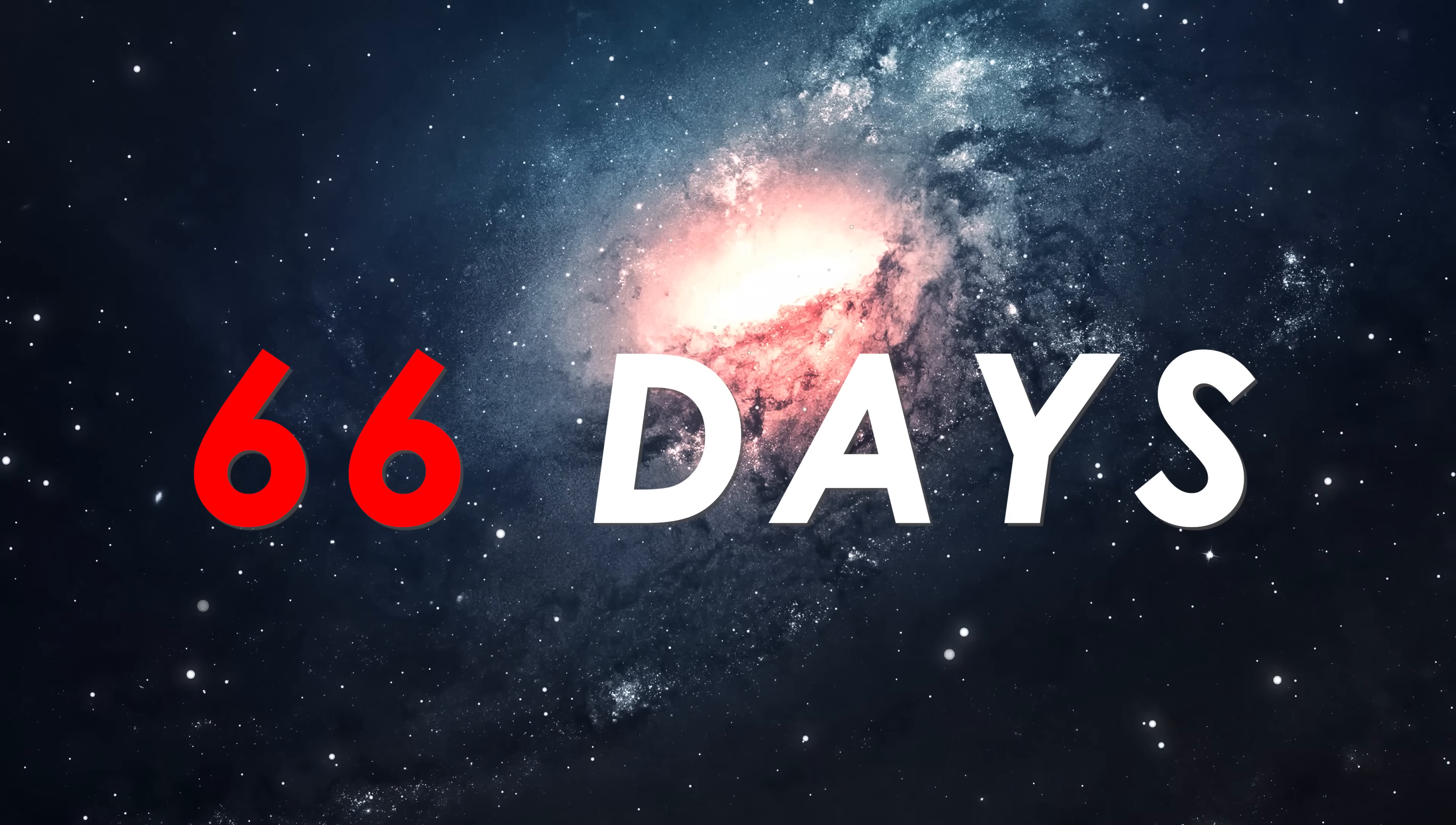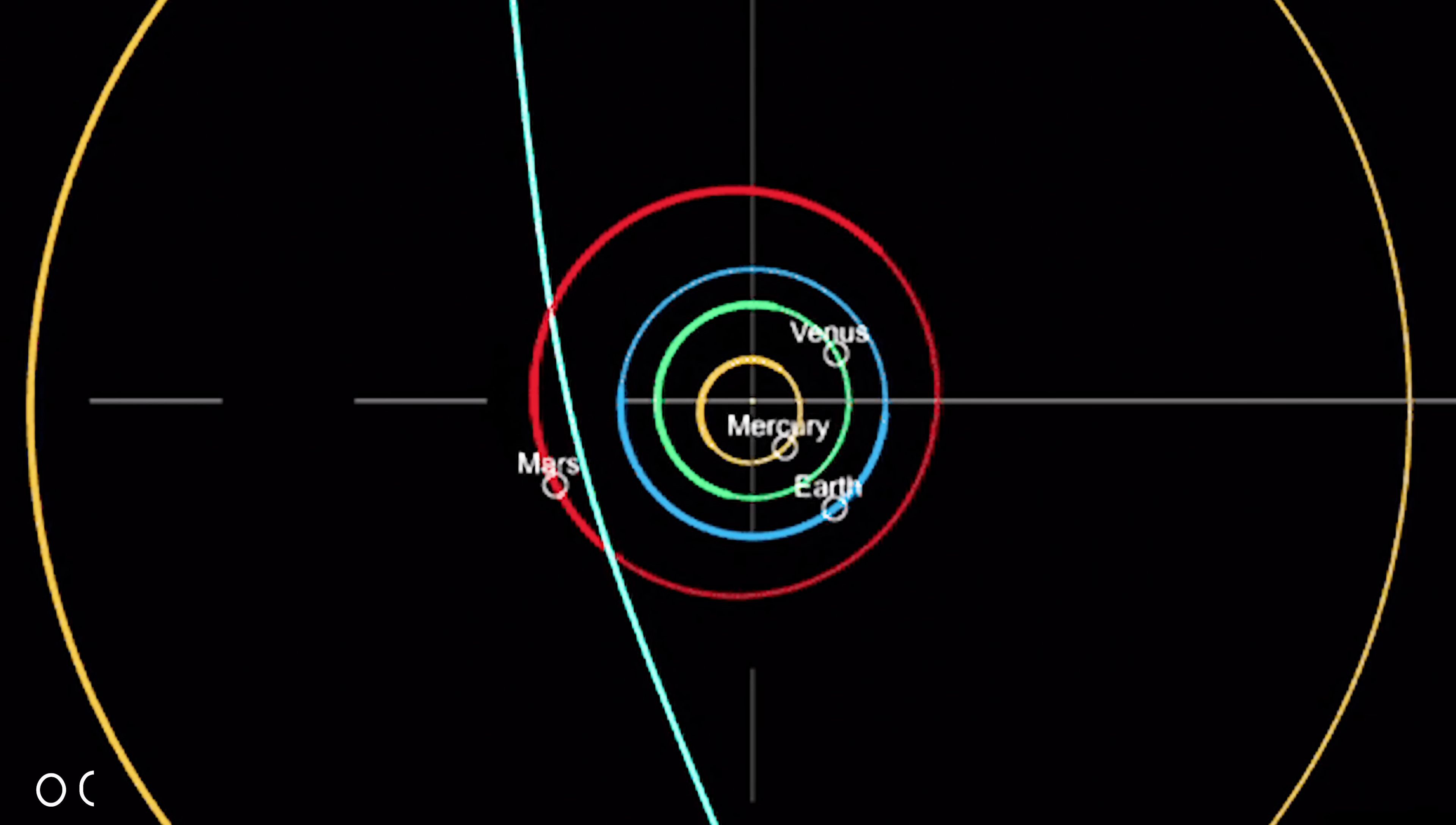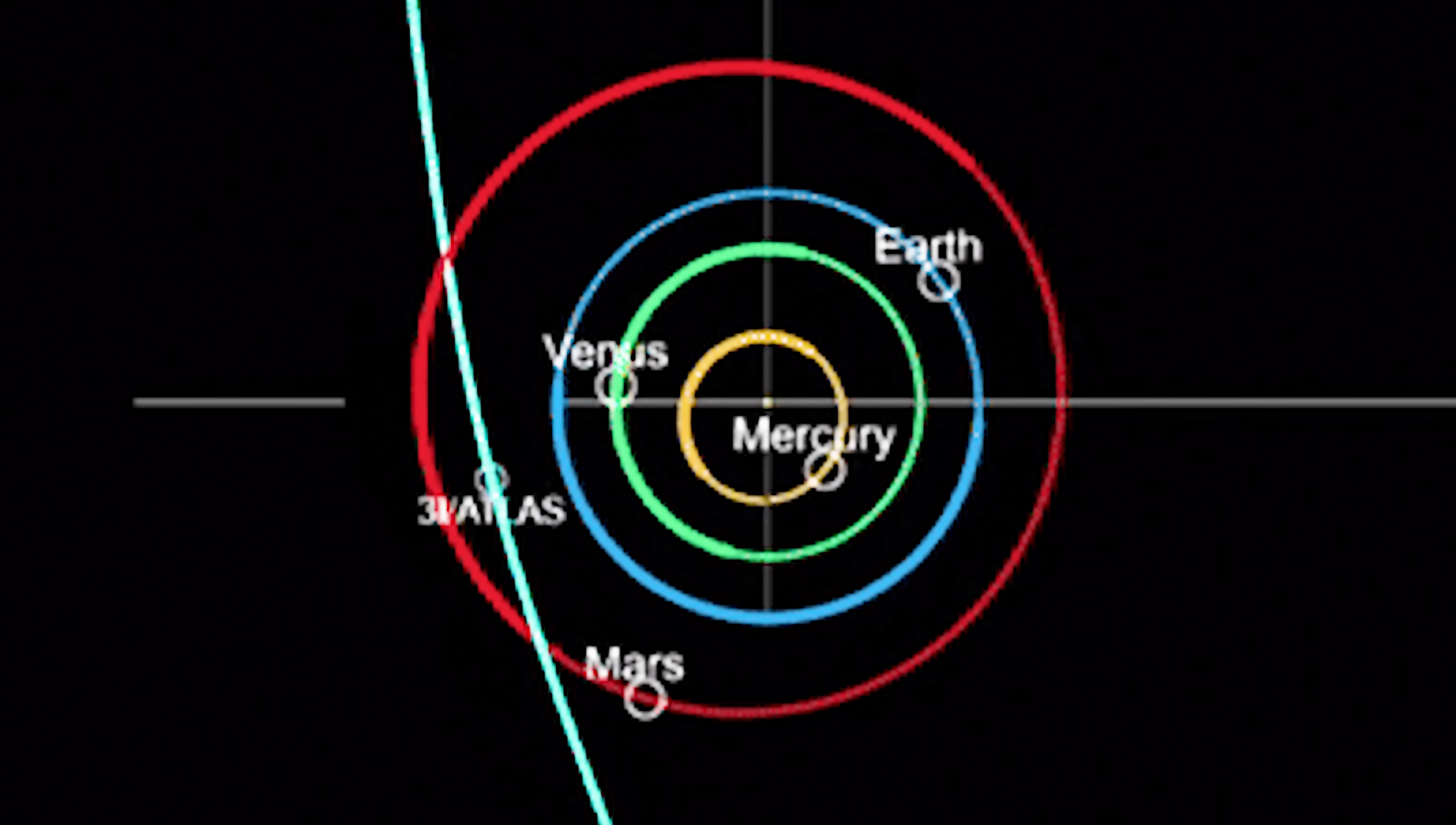Only 66 days remain. A destiny-shaping moment is drawing near. On October 29, 2025, Three-Eye Atlas will reach its closest approach to the Sun, perihelion.